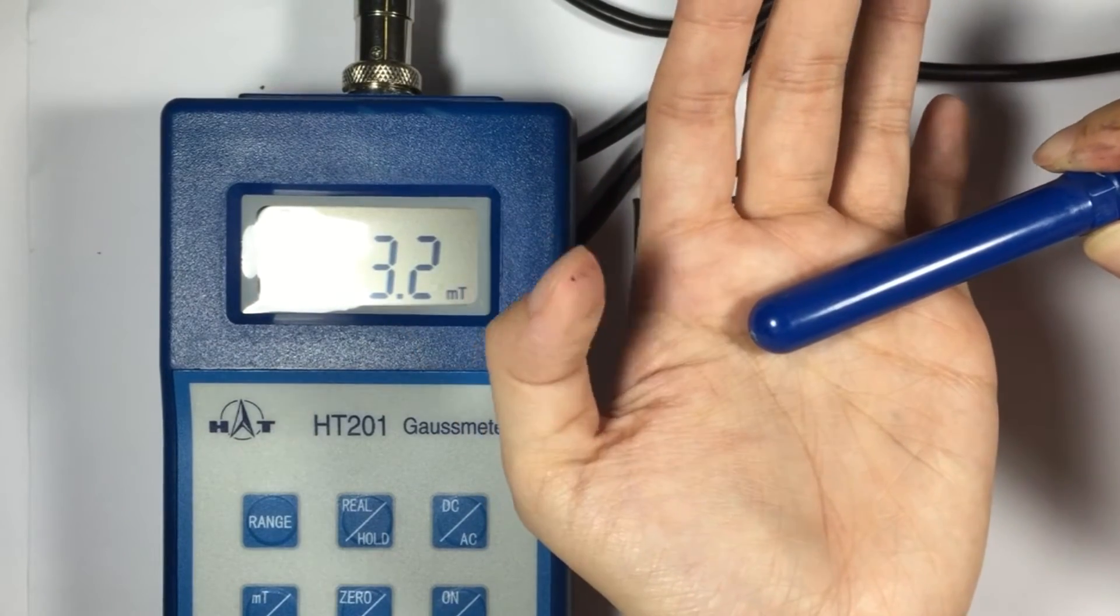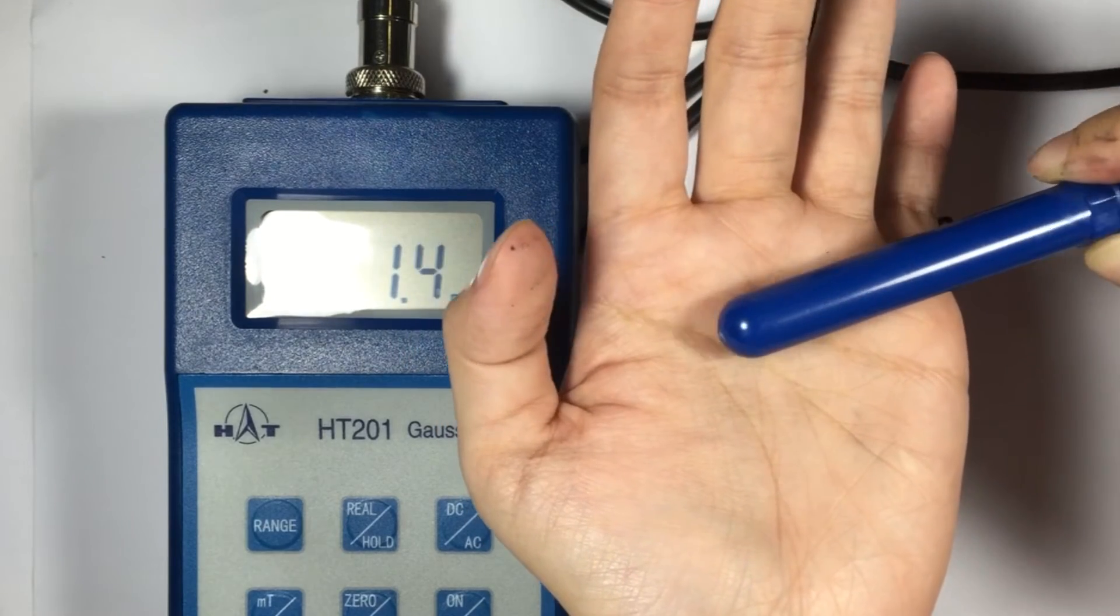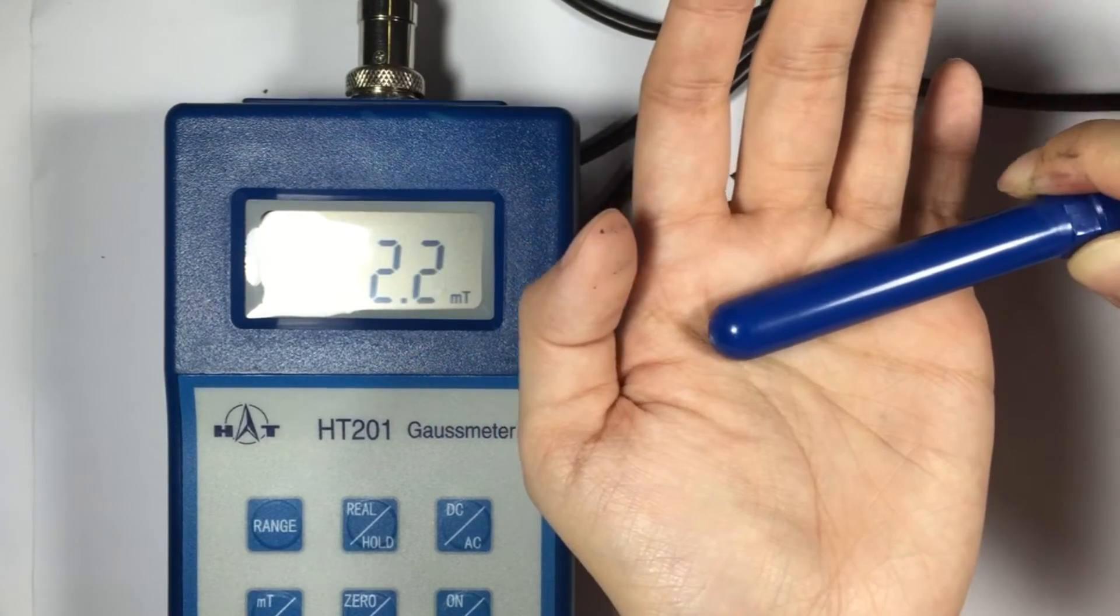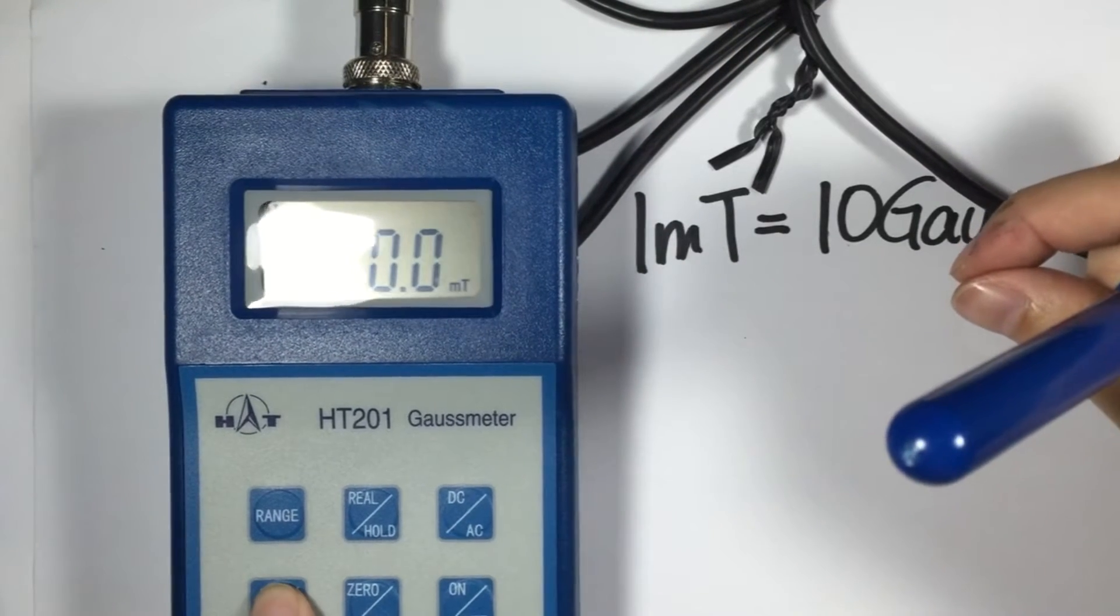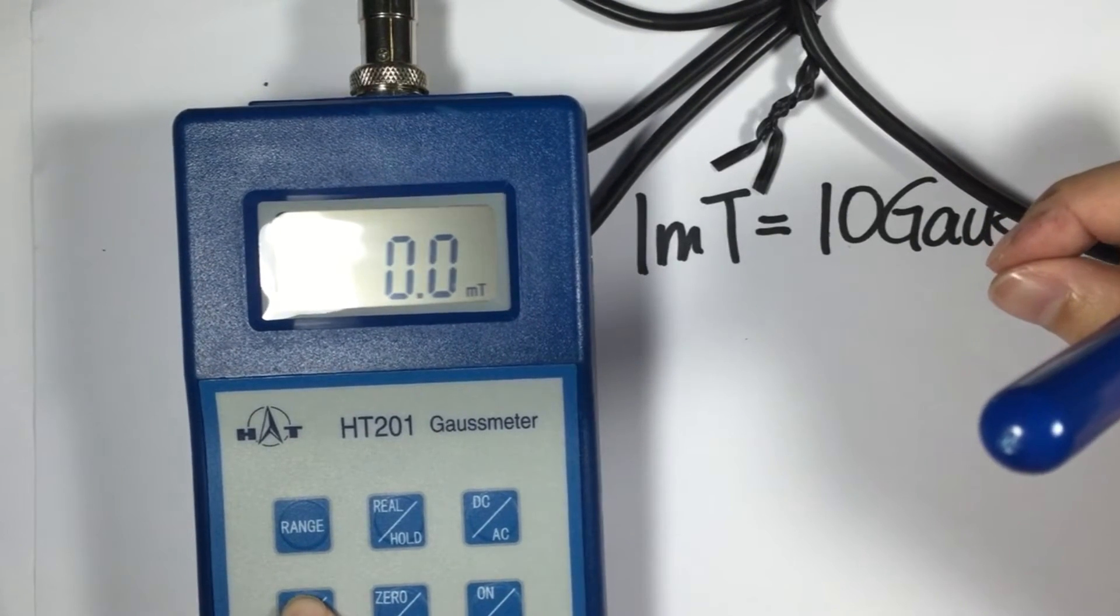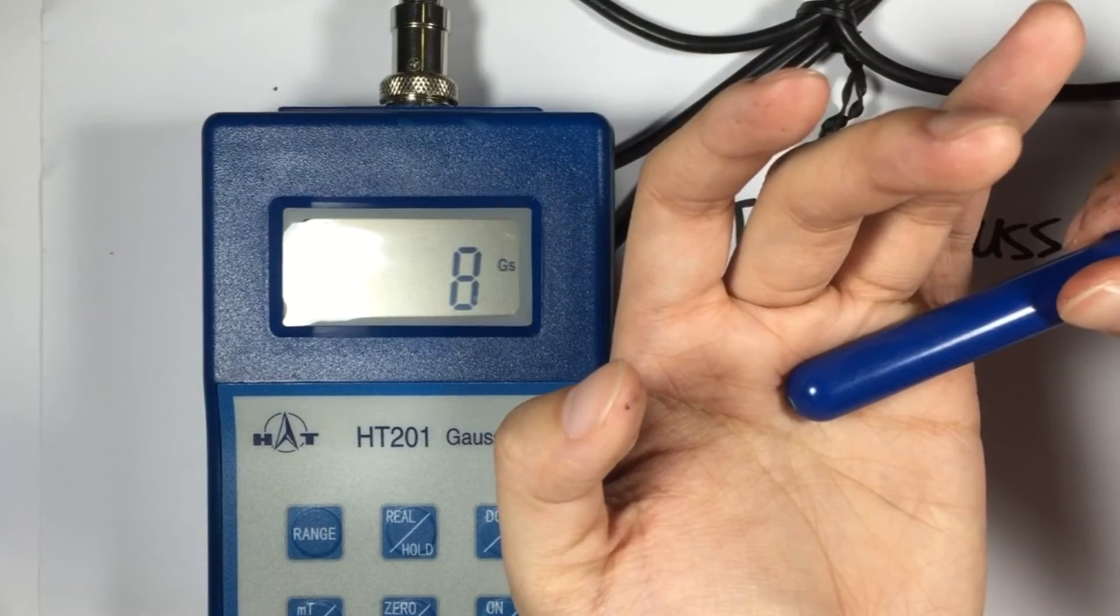And as you can see, it usually fluctuates. You get an idea or you get a range. So it's around 2 to 3. I prefer using gauss. There's no decimal. So usually, using this gauss meter, we have to add another zero. So this one's 80 gauss.